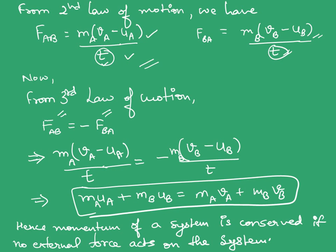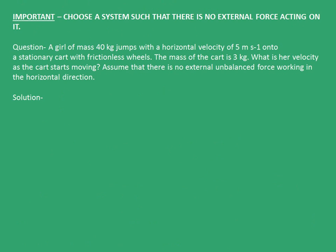We equate these two terms FAB and FBA to obtain the equation MAUA plus MBUB equals MAVA plus MBVB. This means the initial momentum equals the final momentum of the system. Hence, momentum of a system is conserved if no external force acts on the system. The important point is we must choose a system such that there is no external force acting on it.